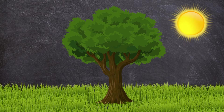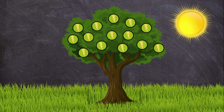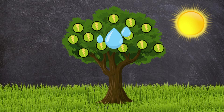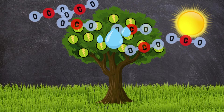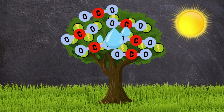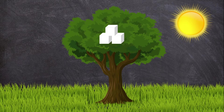To make food, plants trap energy from sunlight in their leaves. They use this energy to change water from the soil and carbon dioxide from the air into a sugary food called glucose. Glucose helps the plants stay alive and grow.